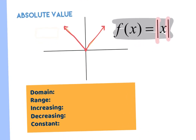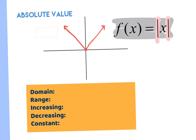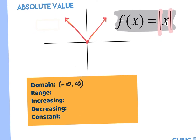We're going to practice domain, range, increasing, decreasing, and constant behaviors with each one of these. Remember domain goes left to right. Those arrows point left to right, which means negative infinity to positive infinity — which would be true for any absolute value because there's no restriction. For range, we go bottom to top. The lowest y on this graph is zero, and it gets a bracket because it's a solid dot, then those arrows point up so it goes to positive infinity. Moving left to right, we start by falling — decreasing from negative infinity up to zero where it stops and changes direction.